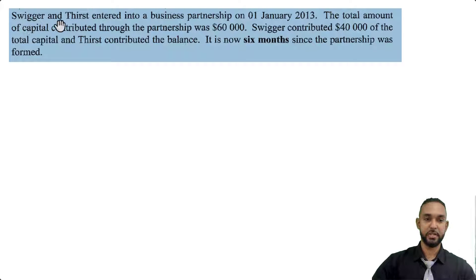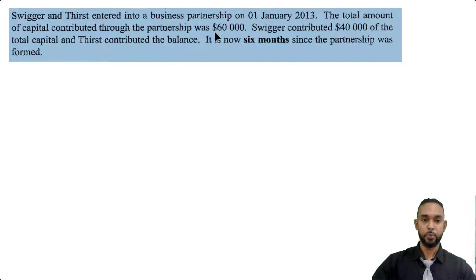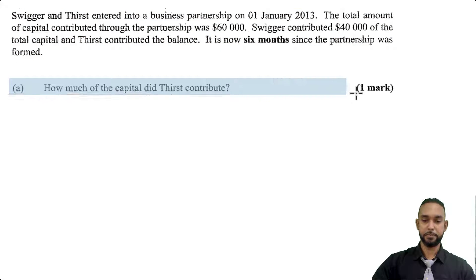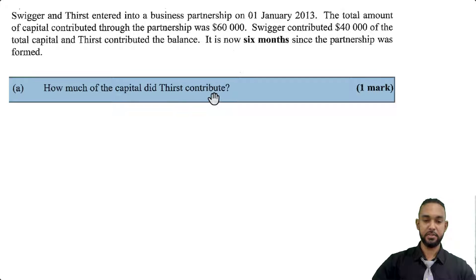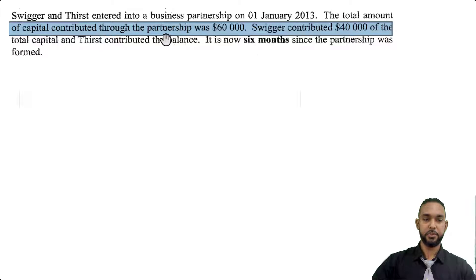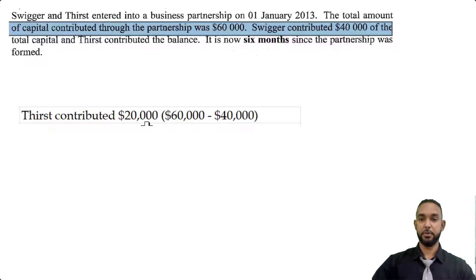The names of the partners are Swigger and Thirst. They entered into a partnership on the 1st of January 2013. The total capital contributed to the partnership was $60,000 — Swigger contributed $40,000 and Thirst contributed the balance. So Thirst therefore contributed the difference: $60,000 minus $40,000 equals $20,000.